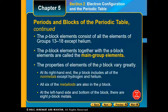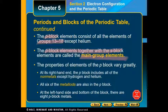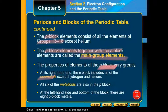Moving on to main group elements. Main group elements are any element in the S and P block. The P block itself is groups 13 through 18, except helium. Main group elements also include hydrogen and helium because they're part of the S block. The properties of the P block vary greatly: we have non-metals on the right-hand end, metalloids along the stair step, and metals in that lower left corner.